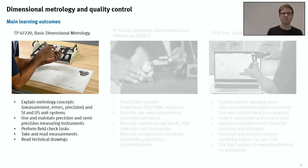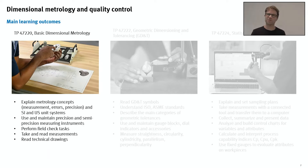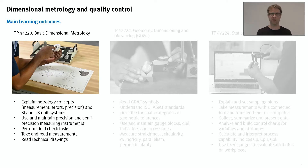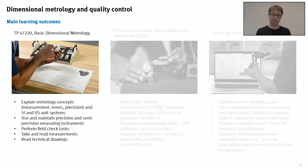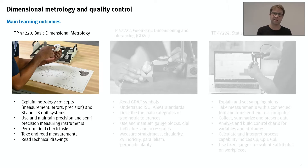For the first package, Basic Dimensional Metrology, the main learning outcomes include explaining what metrology is, covering the concepts of measurement errors, precision, and accuracy. We deal with both the SI and US customary systems of units, since you'll find both in many places. Students learn how to use and maintain precision and semi-precision measuring instruments, perform field checks to confirm measurement accuracy, and read technical drawings.